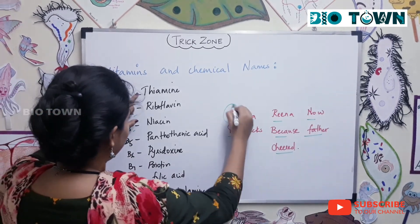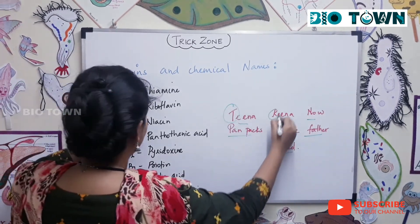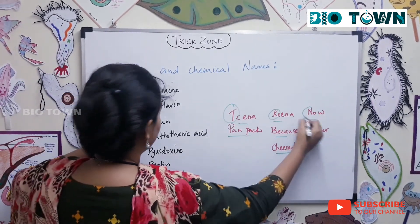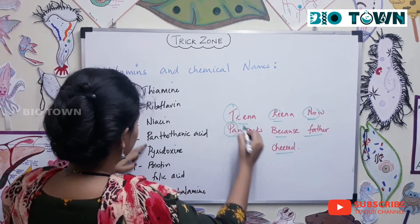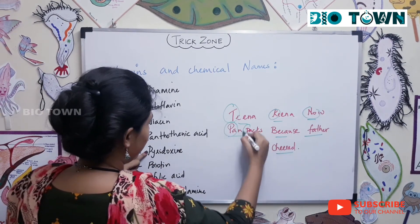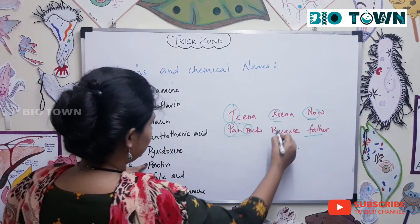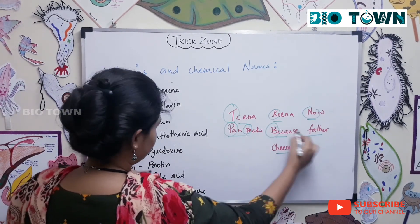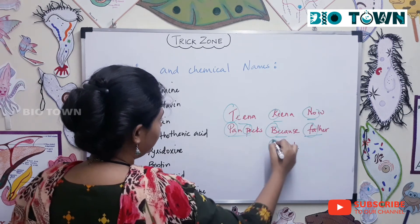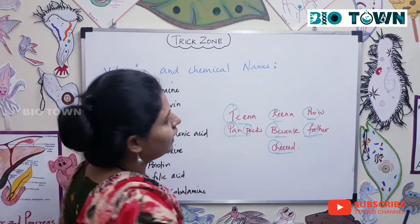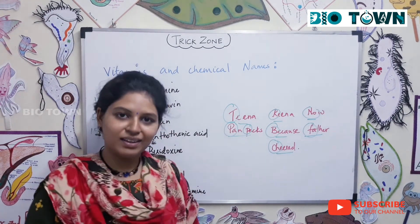So to recap — thiamine, riboflavin, niacin, pantothenic acid, pyridoxine, biotin, folic acid, and cyanocobalamin. Thank you!